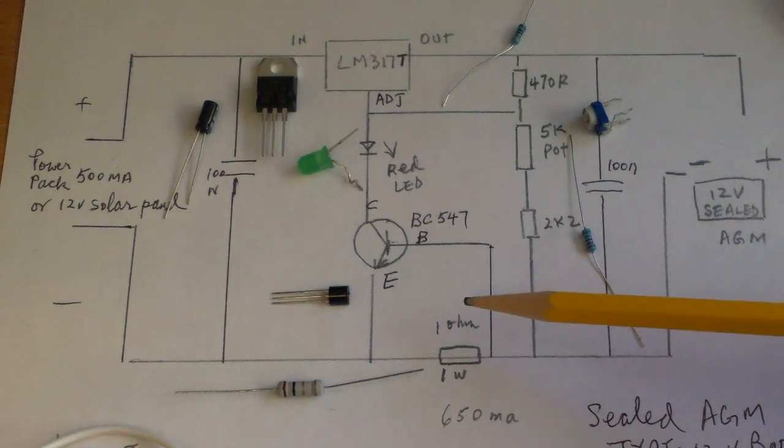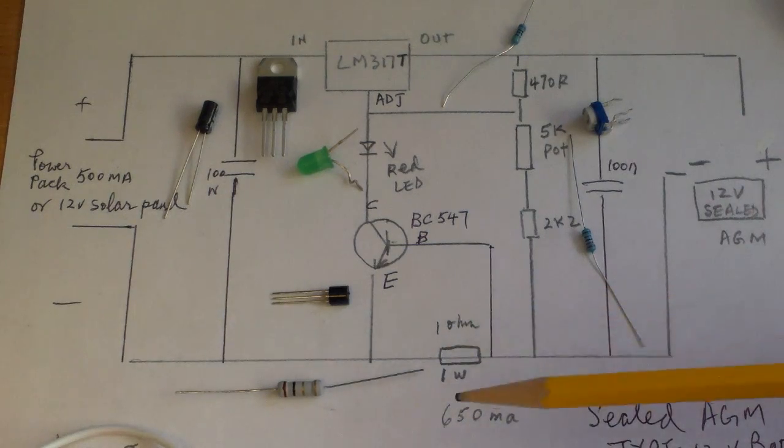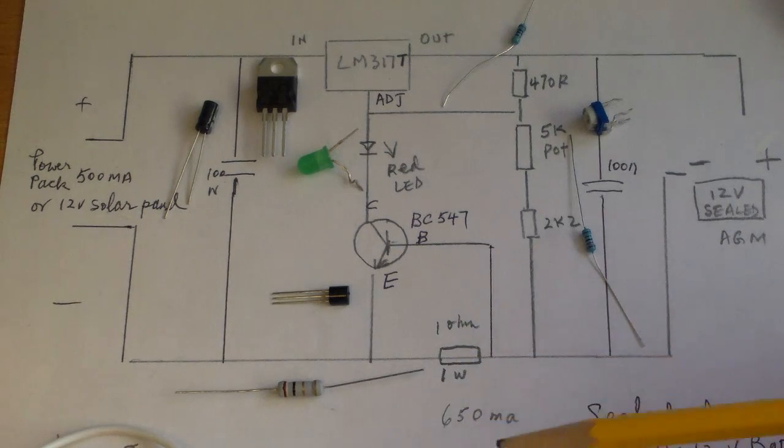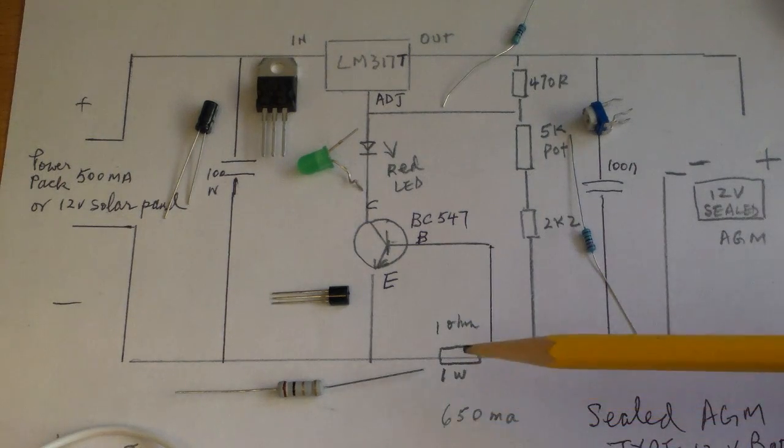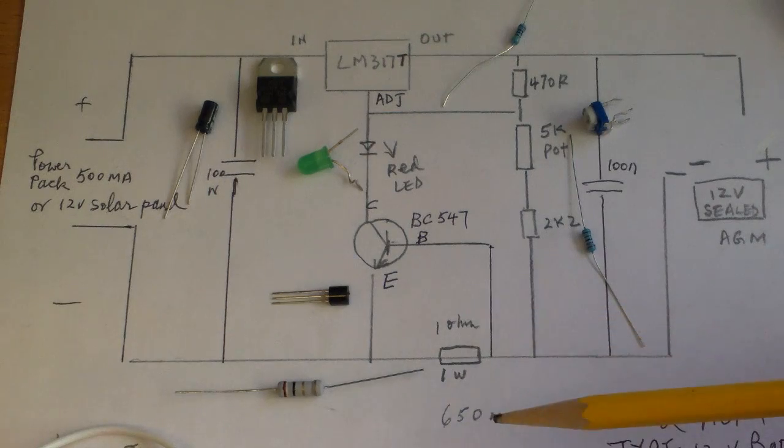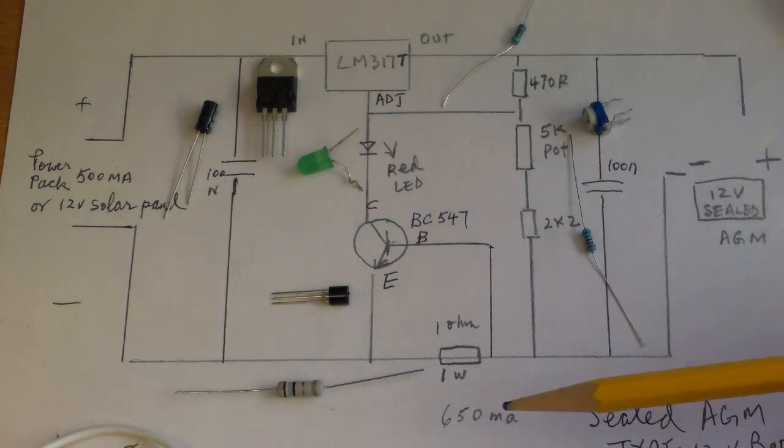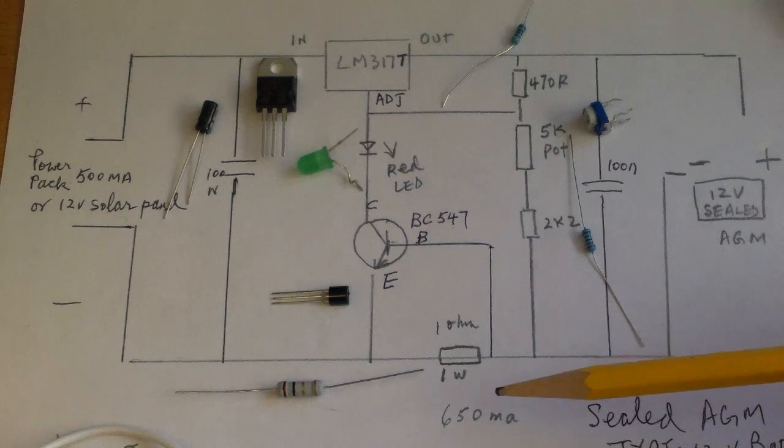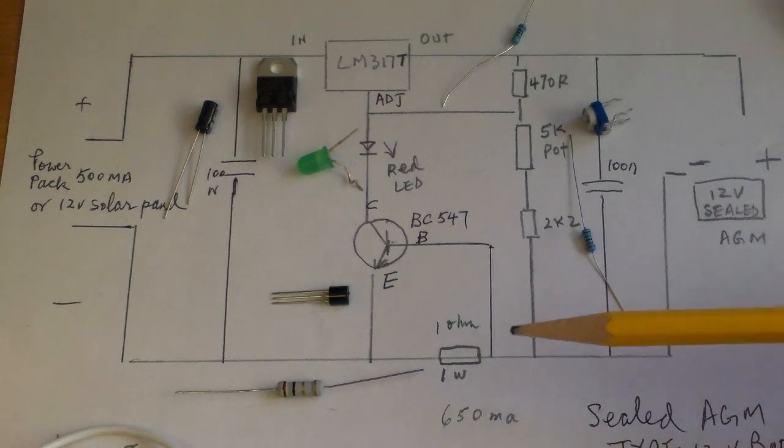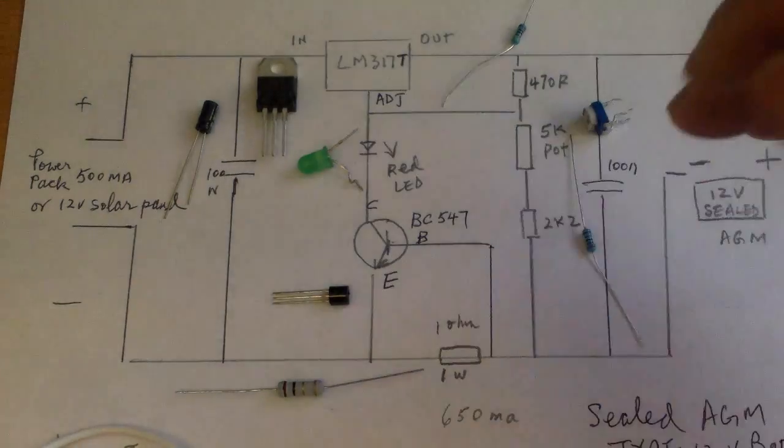You can change it to 2.2 ohm if you want a lower charging current. This 1 ohm will allow about 650 milliamps of charging current to your sealed lead acid battery or the AGM type battery.